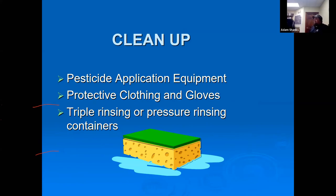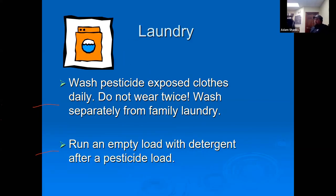After application, clean up your equipment and PPE, and triple rinse containers. Dump the washout back into the treated area — not on the driveway or yard. Wash your clothes immediately after applying a pesticide, and wash them separately from your family's clothes. Run an empty load through the washing machine in between to remove any contaminants before washing family clothes. Shower thoroughly after any exposure.